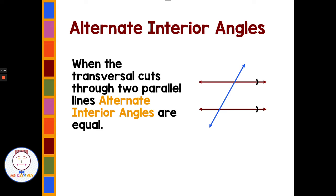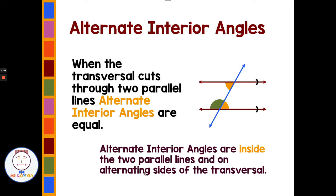Now we're going to talk about alternate interior angles. When the transversal cuts through two parallel lines, alternate interior angles are equal. These angles are on alternate sides of the transversal, and they are inside — between the two parallel lines. The two angles in yellow are alternate interior and are equal. The two angles in green are also on opposite sides of the transversal, inside the parallel lines, and they are also equal. These pairs of angles always have the property of being equal.